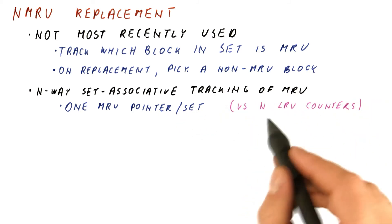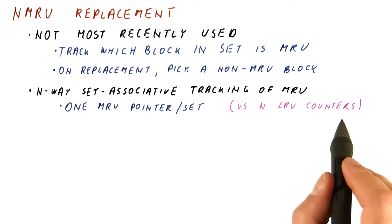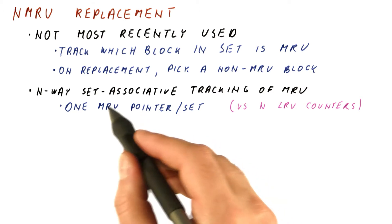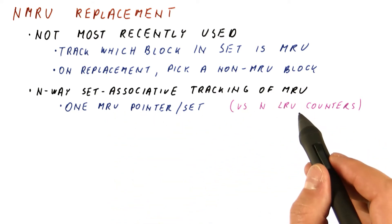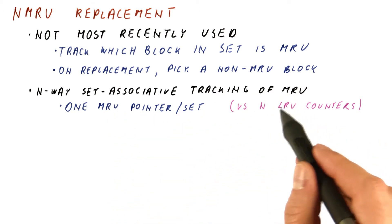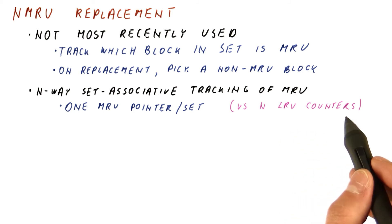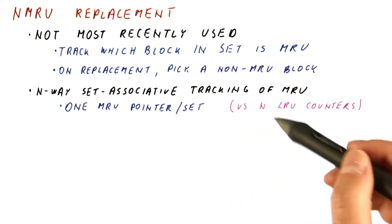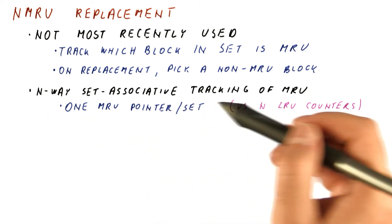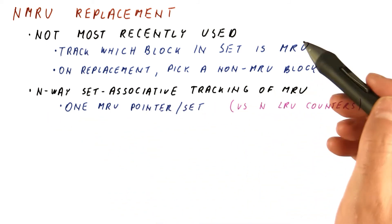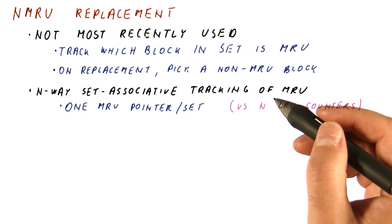Compare this to the N LRU counters we need per set. In a four-way set-associative cache, NMRU needs a two-bit pointer, whereas true LRU would need four two-bit LRU counters. So this policy keeps N times less state for an N-way set-associative cache than the true LRU policy.